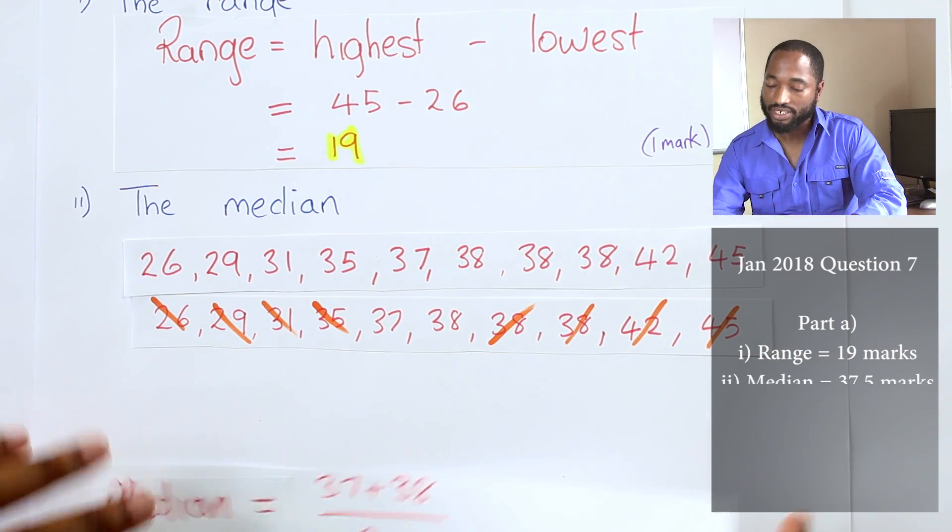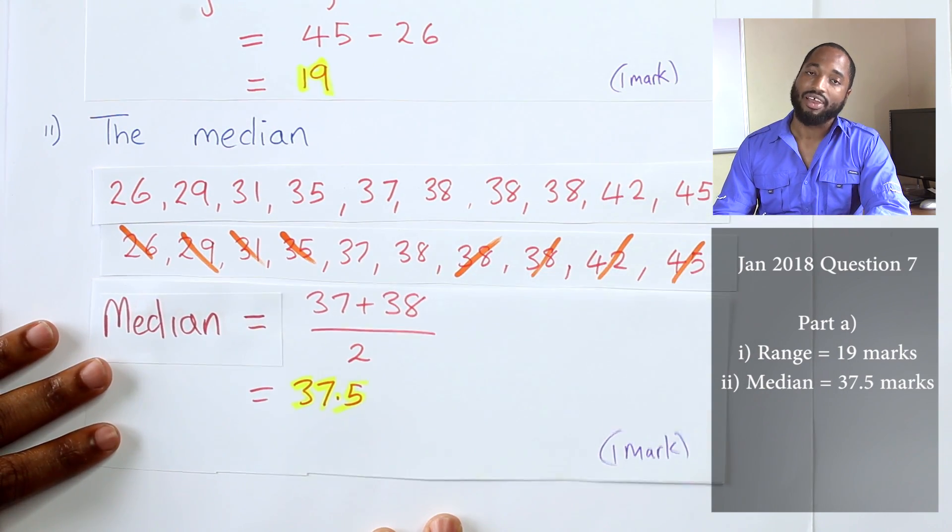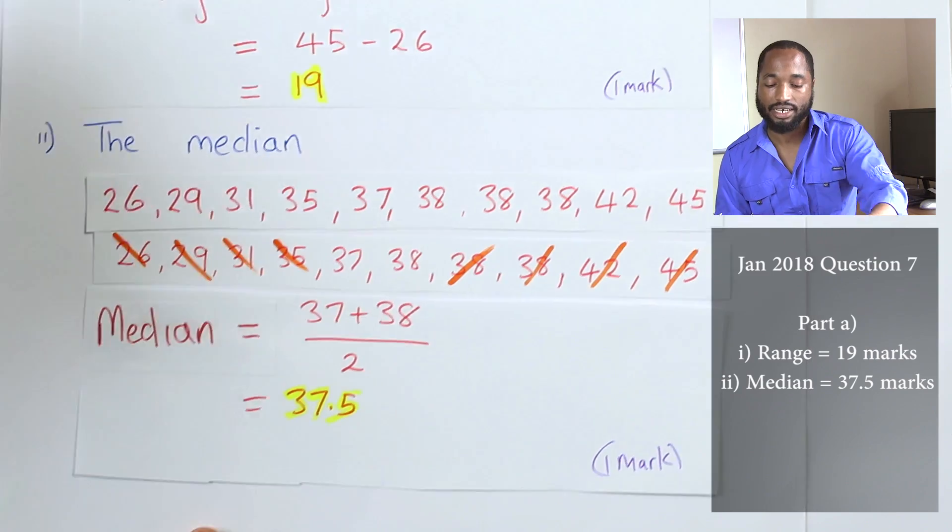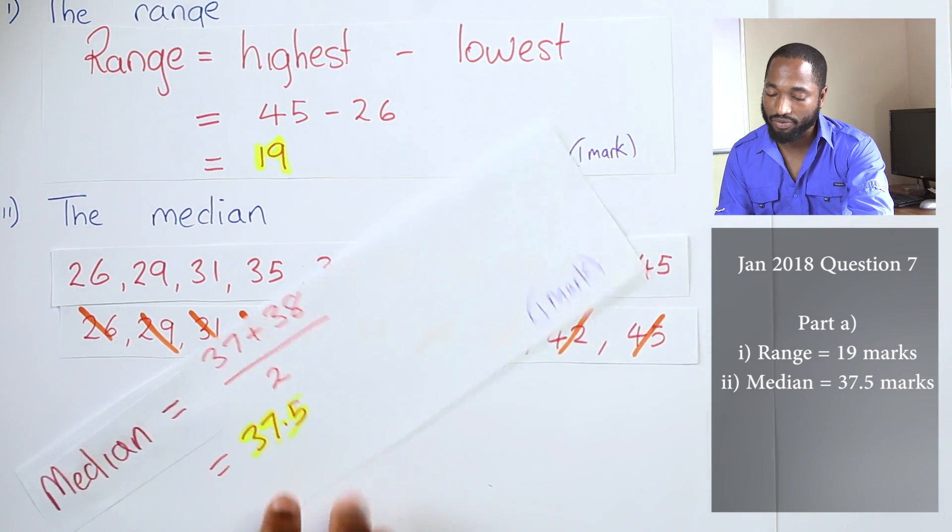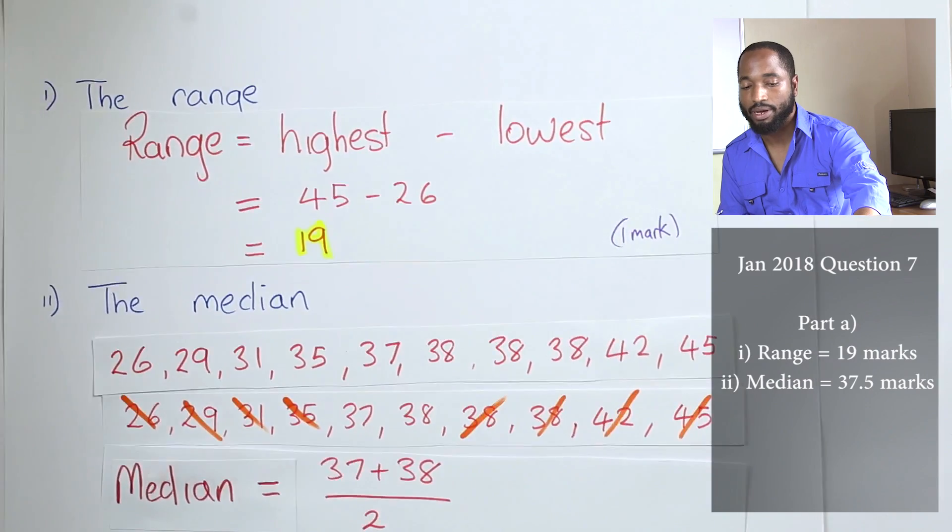In this case we end up with two in the middle. When something like that occurs, you need to add the two together and divide by two. The median is 37.5 in this question. One mark for each part.